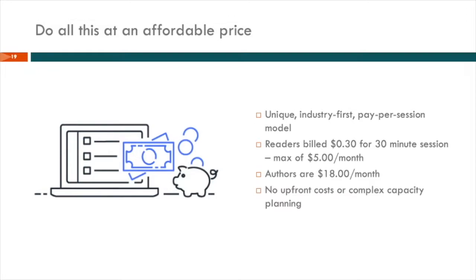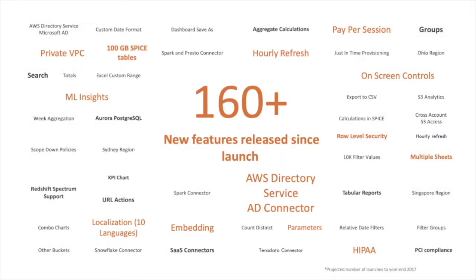QuickSight's only been around for a couple of years — I think it was initially released in 2016, just a little over two years. And they're making investments. I'll be frank: we work with a lot of other analytics tools, and when QuickSight first came out and was generally available, I looked at it and said, 'This is a nice toy.' But I've been working with Amazon for almost a decade, and I know how quickly a nice toy becomes an imperative product. Just in the last two years, they've released over 160 new features on QuickSight.